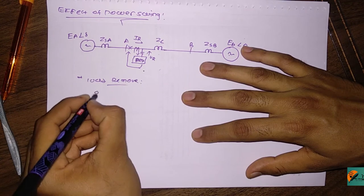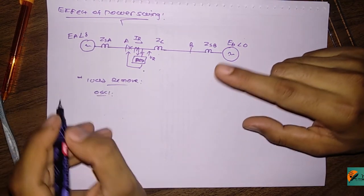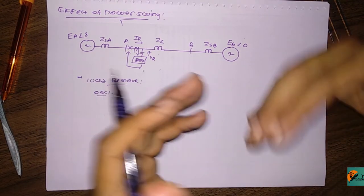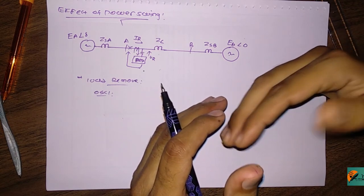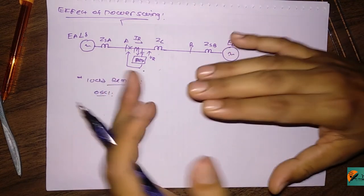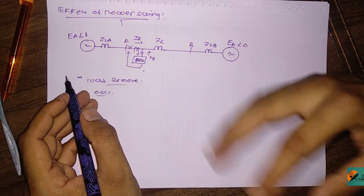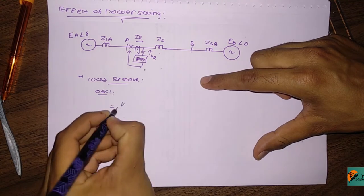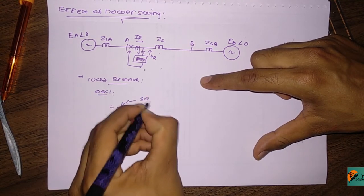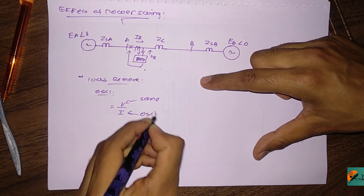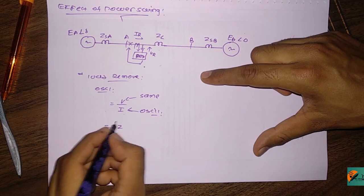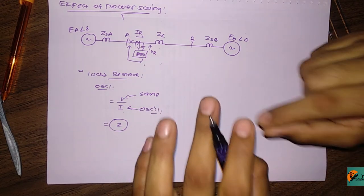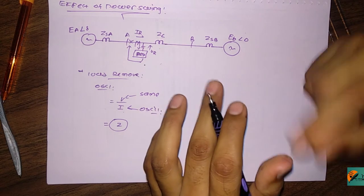The effect of power swing: the system starts to oscillate. Your rotor angle starts to oscillate - the rotor angle keeps oscillating. If the rotor oscillates, then a huge value of current passes for some time, which can also affect your rotor winding. V remains the same but I oscillates. That means V divided by I equals Z, so this Z becomes less than the actual value of the impedance.